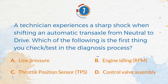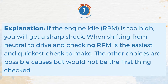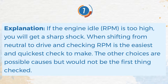The correct answer is B. Engine idling RPM. Explanation: If the engine idle RPM is too high, you will get a sharp shock when shifting from neutral to drive, and checking RPM is the easiest and quickest check to make. The other choices are possible causes but would not be the first thing checked.